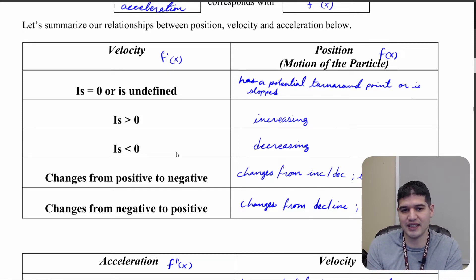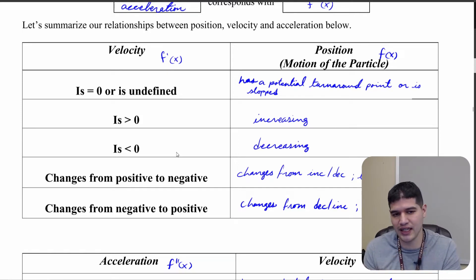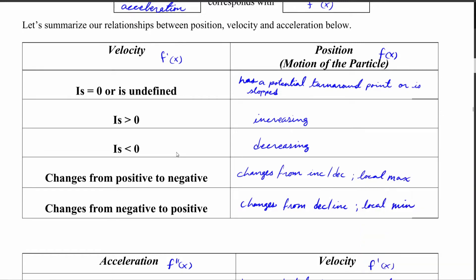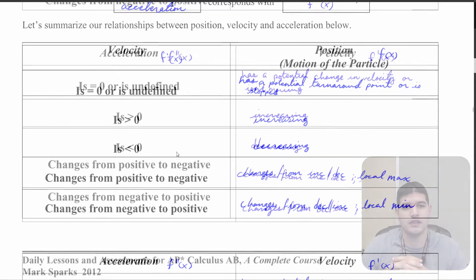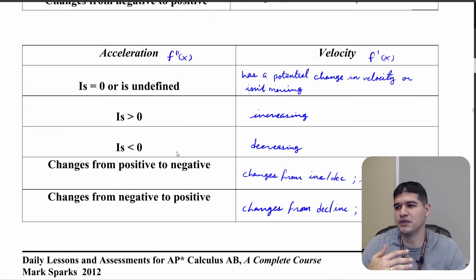If velocity is greater than zero or negative, then the position is increasing or decreasing respectively. If velocity changes from positive to negative, the position goes from increasing to decreasing, which means that the position has a local maximum there. And if it changes from negative to positive, the position goes from decreasing to increasing, which means that the position has a local minimum there.